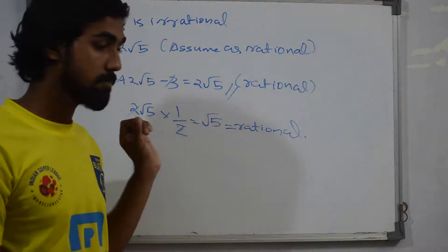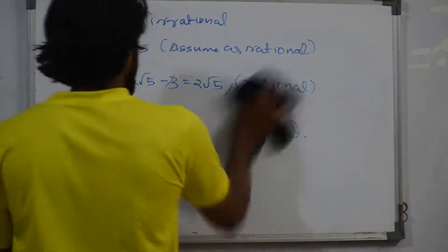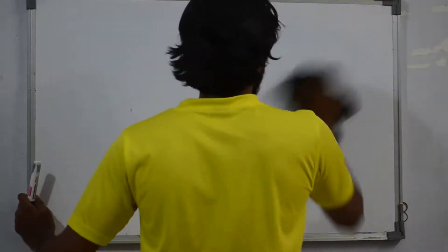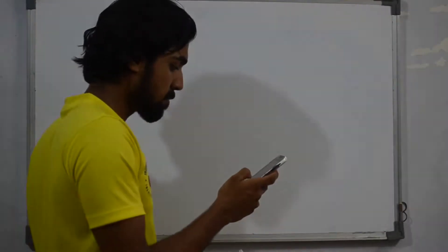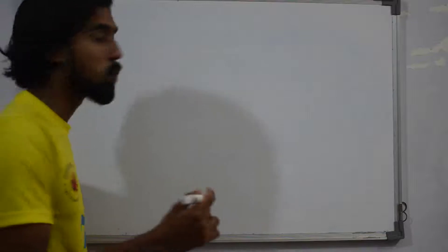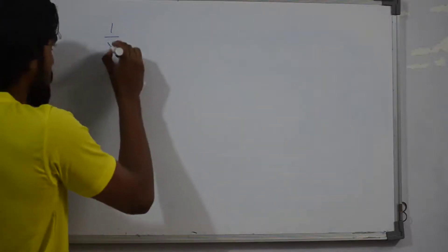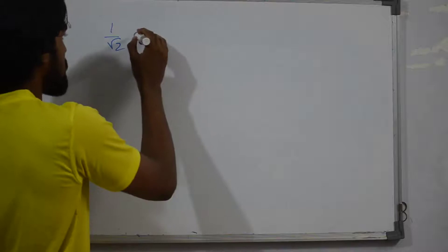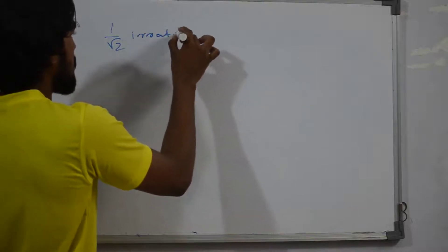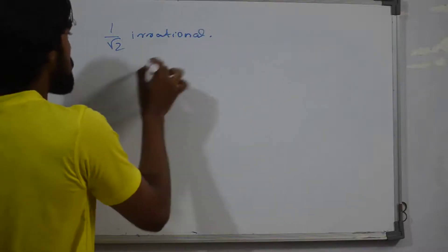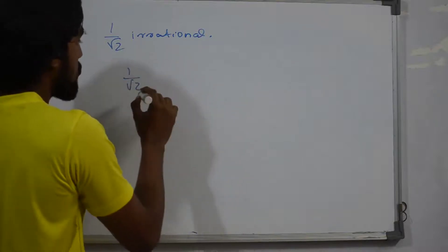Next, we have two more problems on the next slide. The next type of question involves 1 by root 2. These two are different types. For 1 by root 2, just assume that it is rational and proceed from there.